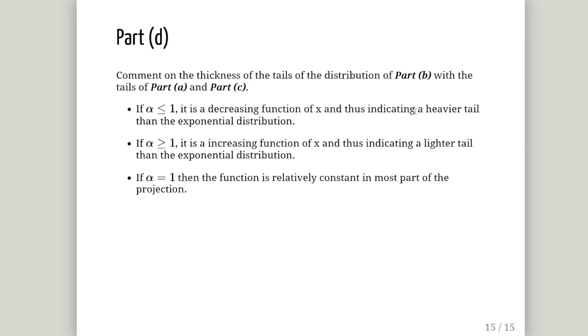Comment on the thickness of the tails of the distributions of part b with the tails of part a and part c. This is the relevance of the alpha parameter. If alpha is less than 1, it is a decreasing function of x and therefore indicating a heavier tail compared to the exponential distribution. If alpha is greater than 1, it is an increasing function of x and indicating a lighter tail than the exponential distribution. And if alpha is equal to 1, then the function is relatively constant for most of the projection.